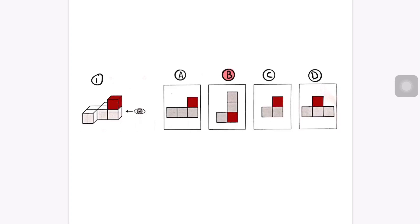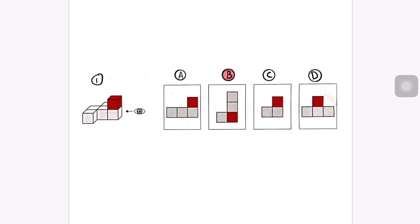Looking at A, C, and D — the 3D shape on the left-hand side is three squares wide: that's one square, two squares, and three squares. So we're also going to eliminate any choice that isn't three squares wide. As a result, we eliminate C because C is only two squares wide. We want three squares wide, so we're left with D and A.